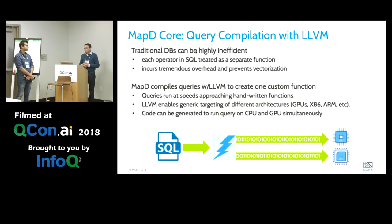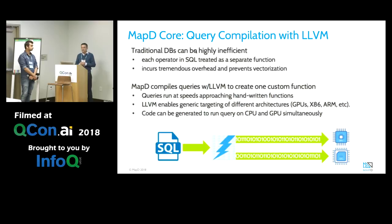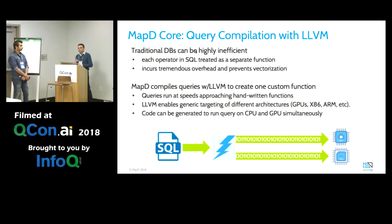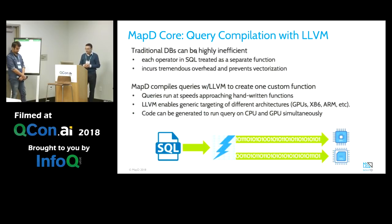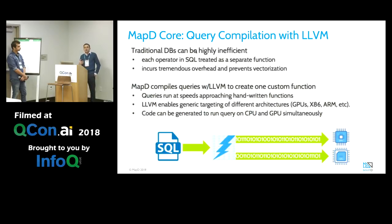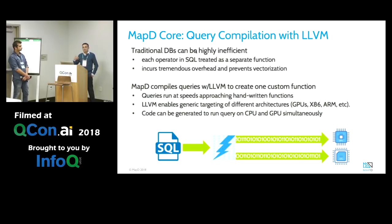We use a technique called just-in-time compilation using the LLVM approach, where we create intermediate code and then, depending on the backend — whether it's a GPU, X64, or ARM — we create the final code. This allows us to run on multiple platforms, but on GPU we have extremely great performance. We also try to keep data as much as possible in GPU memory and vectorize most of the SQL query execution to leverage the GPU platform.